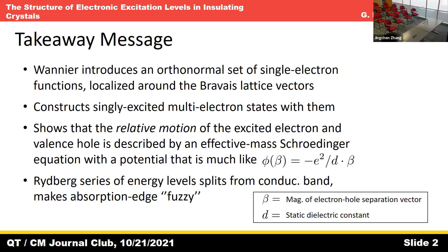What this is going to do is create a split-off Rydberg series of energy levels just below the bare absorption edge. When you're talking about an insulating crystal, it can absorb light only if the light has enough energy to make the electron cross the band gap. The band absorption starts when the energy of the photon equals the band gap. Rather than there being a sharp edge, what you really have in insulating crystals is a series of Rydberg levels just under the bare conduction band. D here is the dielectric constant.